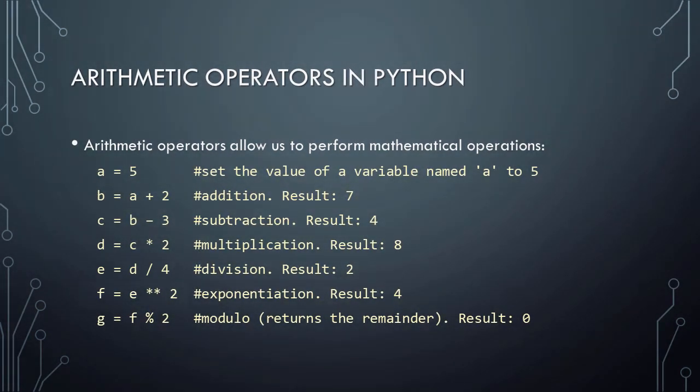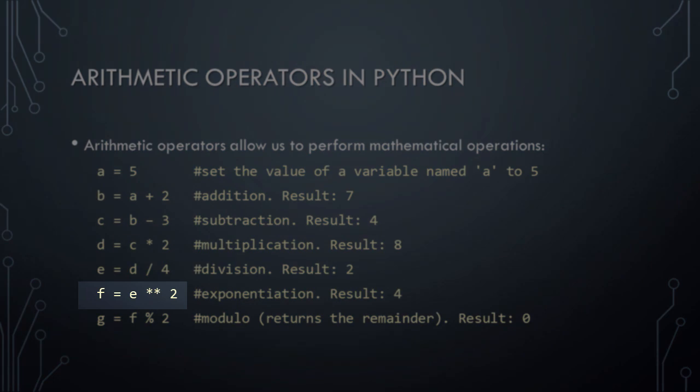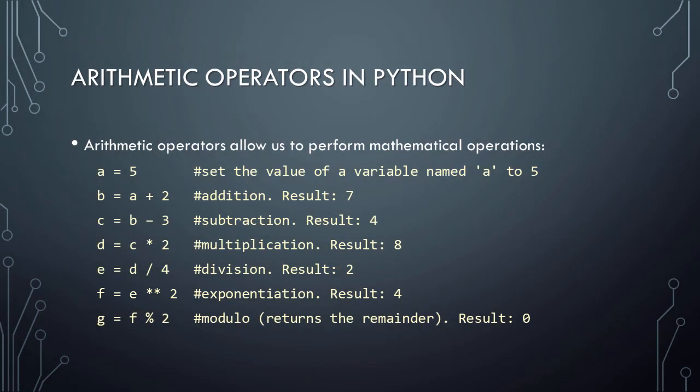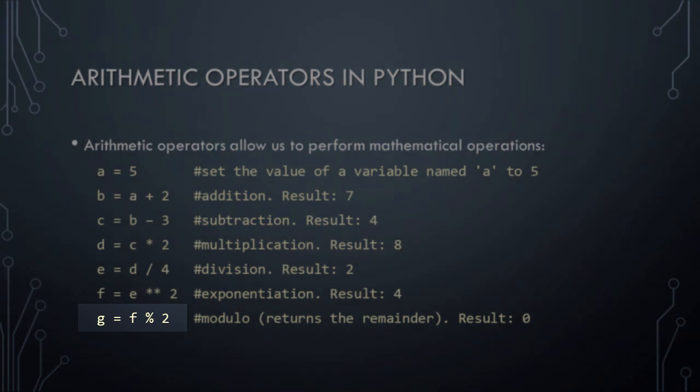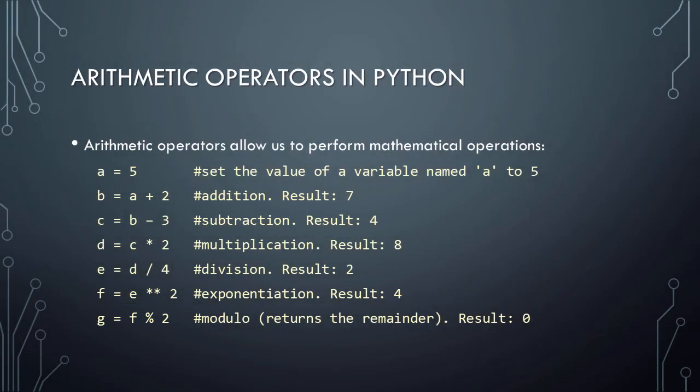In Python, 2 asterisks is the symbol for exponentiation. Thus, 2 asterisk asterisk 2 translates to 2 to the power of 2, or 2 squared, which of course equals 4. Finally, the percent sign in Python is used to perform a modulo operation, which returns the remainder after dividing one number by another.